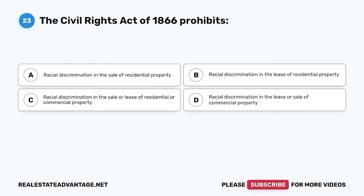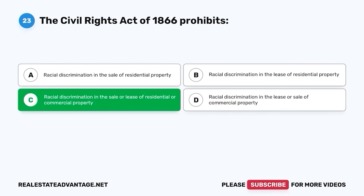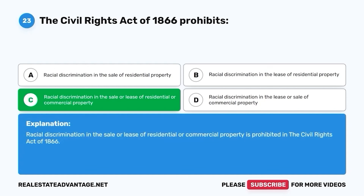Question 23. The Civil Rights Act of 1866 prohibits: A. Racial discrimination in the sale of residential property. B. Racial discrimination in the lease of residential property. C. Racial discrimination in the sale or lease of commercial property. D. Racial discrimination in the lease or sale of commercial property. The correct answer is C. Racial discrimination in the sale or lease of residential or commercial property is prohibited in the Civil Rights Act of 1866.